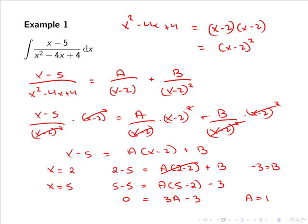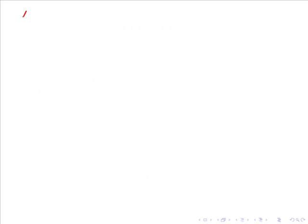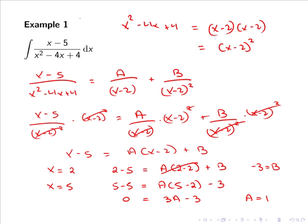Now that we've determined the values of A and B, we substitute them back into our partial fraction expansion. So (x-5)/(x²-4x+4) is given by 1/(x-2) + (-3)/(x-2)².